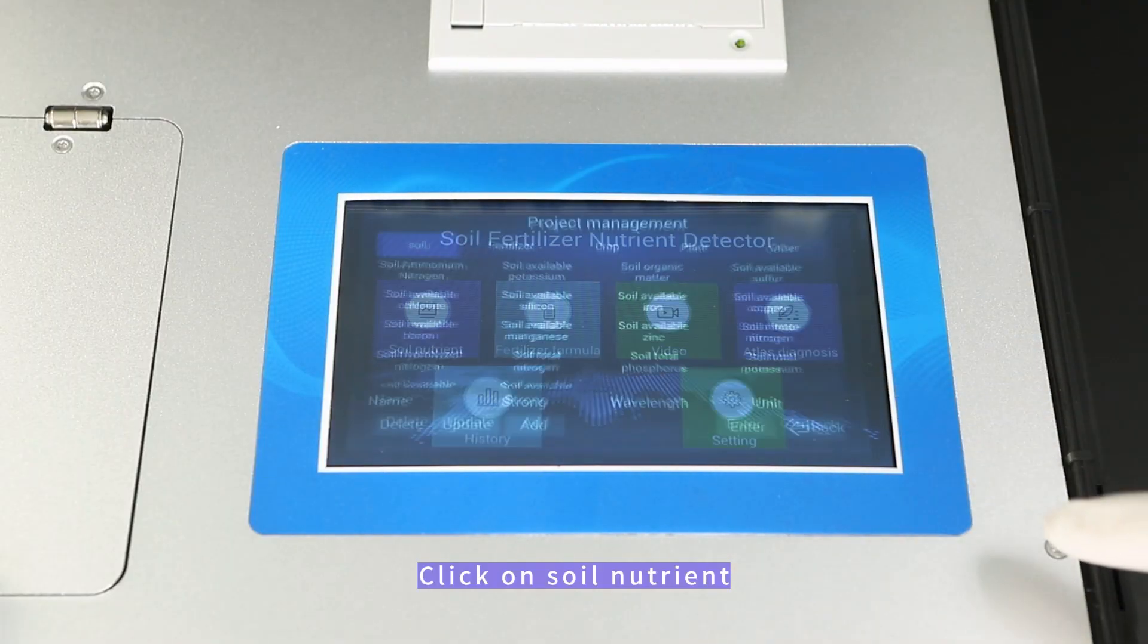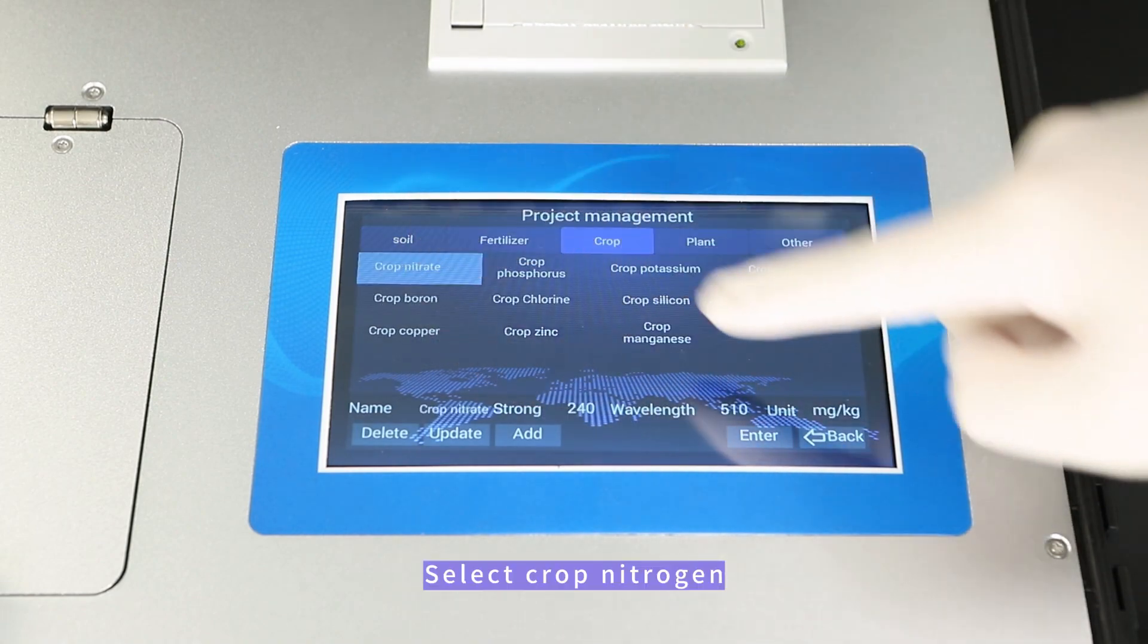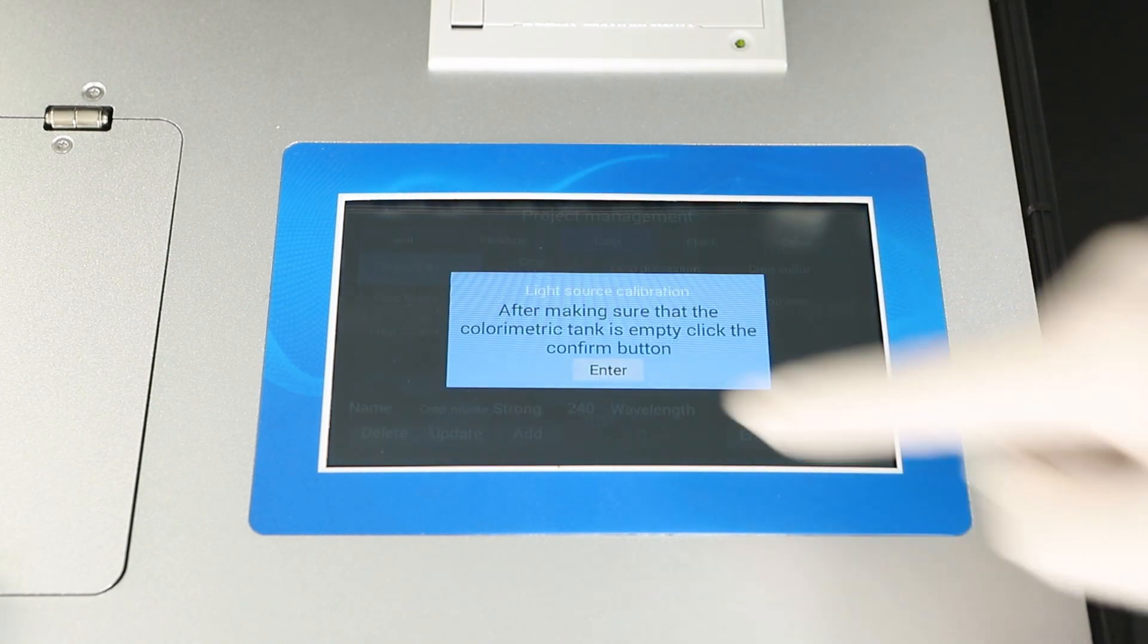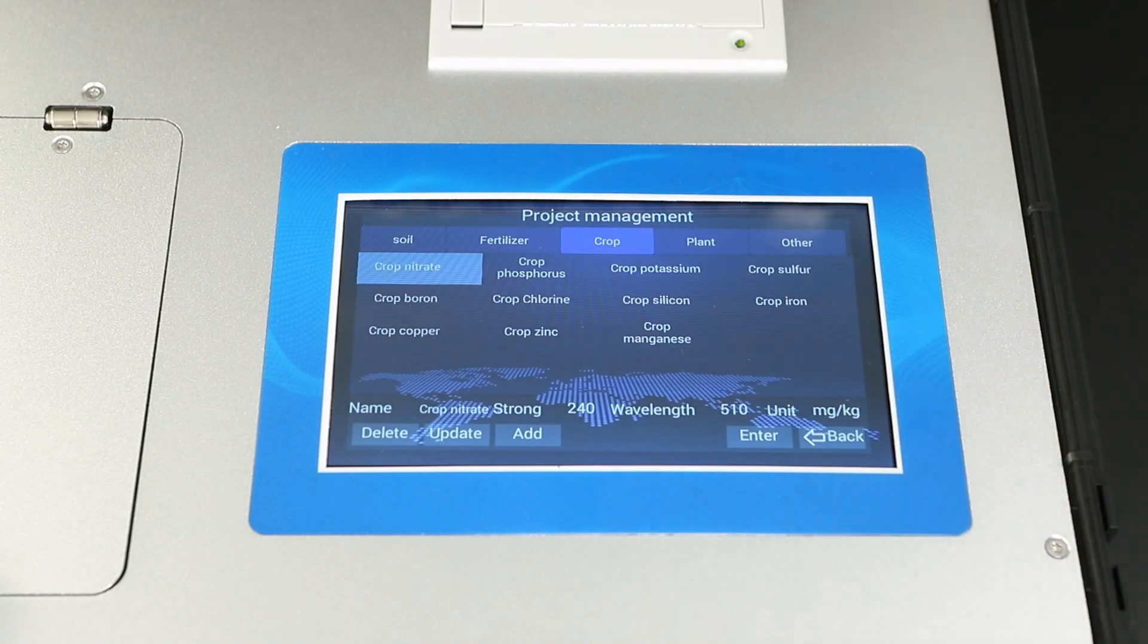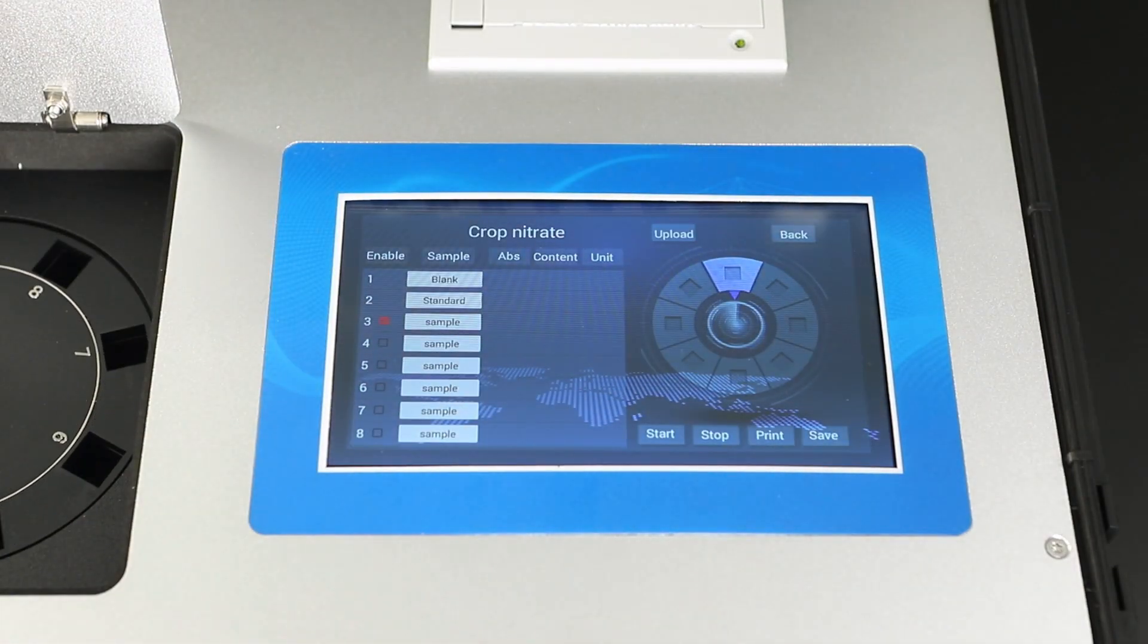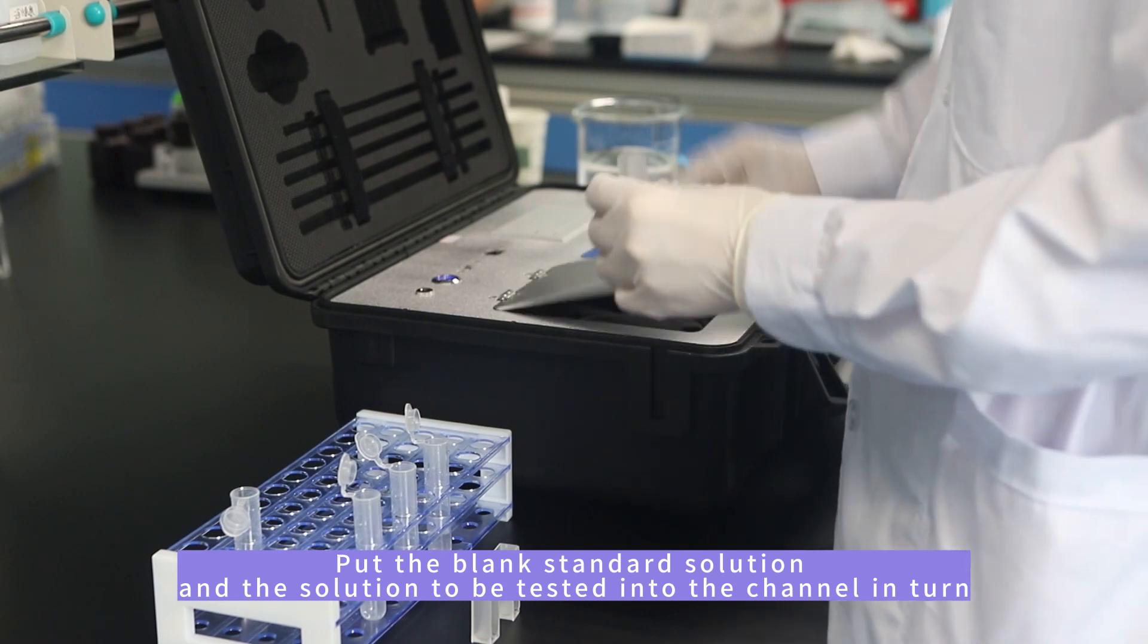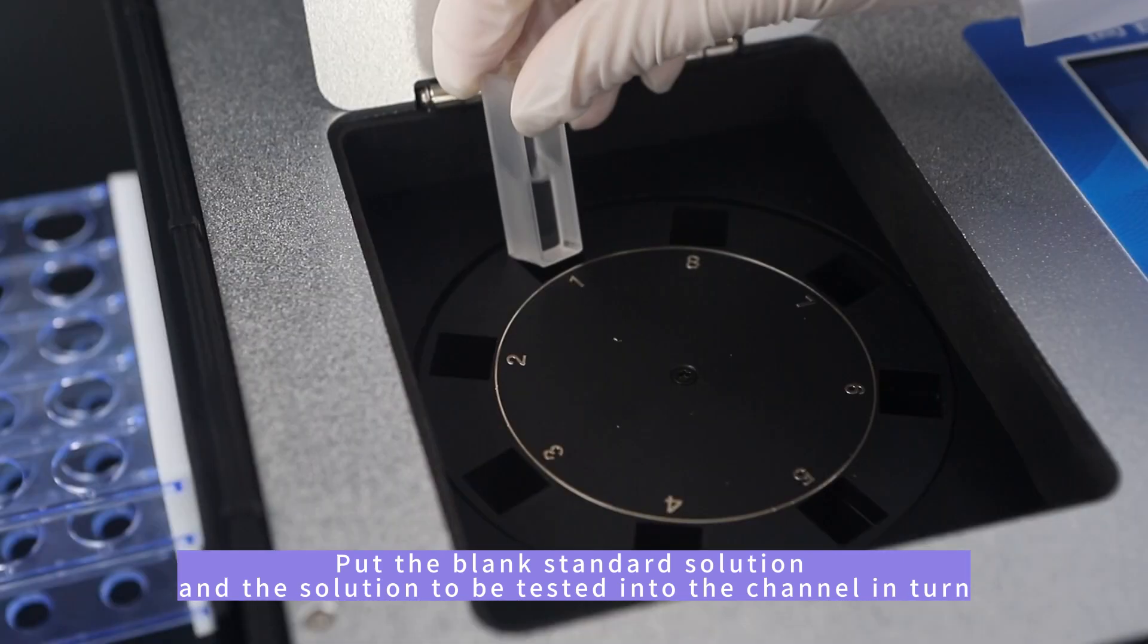Click on soil nutrients, select crop nitrogen, and wait for the light source calibration to complete. Put the blank standard solution and the solution to be tested into the channel in turn.